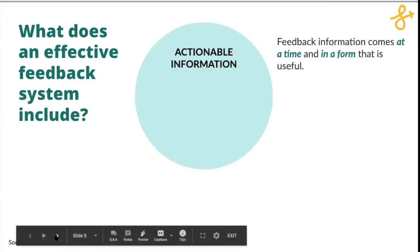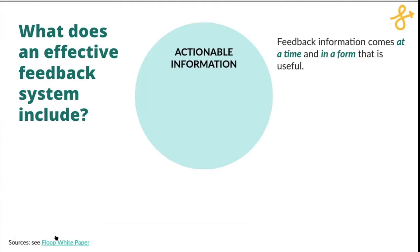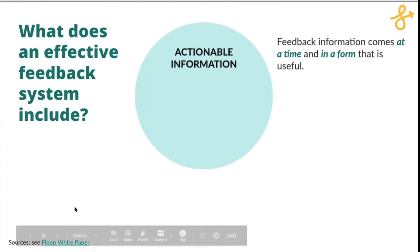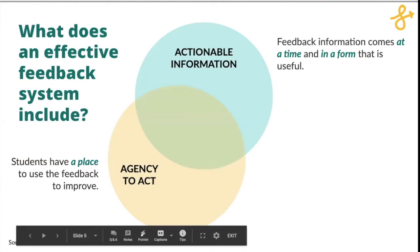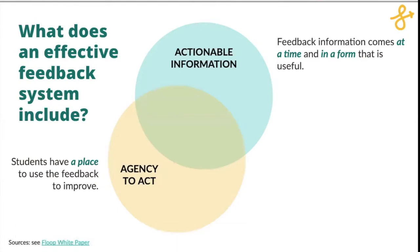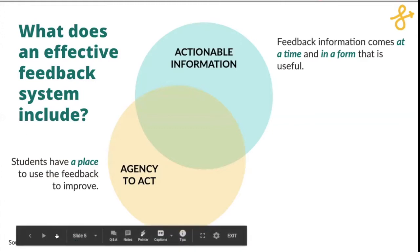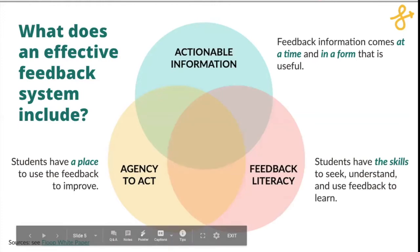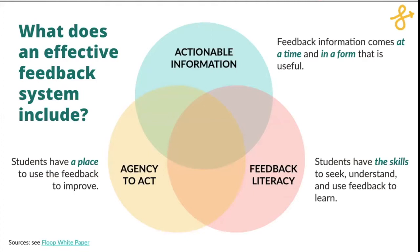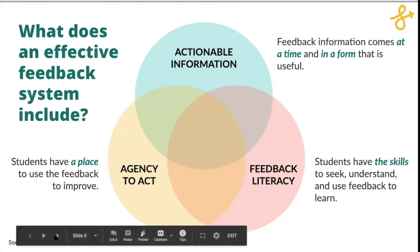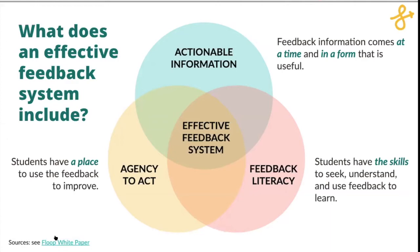Research tells us there are different pieces that go into an effective feedback system. The first is actionable information — students get feedback at a time and in a form that is useful to them. The second is agency to act — they need to actually be able to take that feedback and do something with it, having a place and time where it's relevant. And third is feedback literacy: a set of skills that allows them to seek, understand, and use feedback to learn. We really need all three dimensions to see the good learning outcomes research promises.